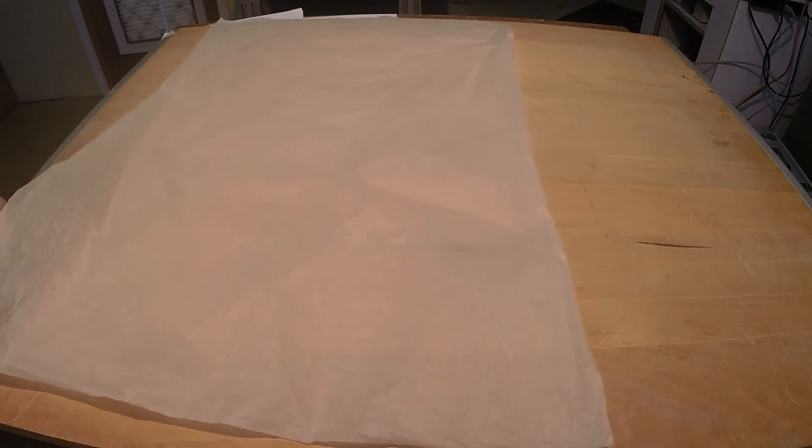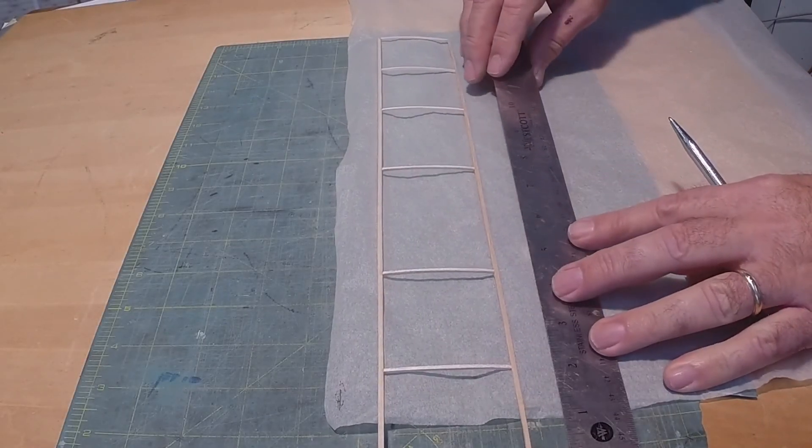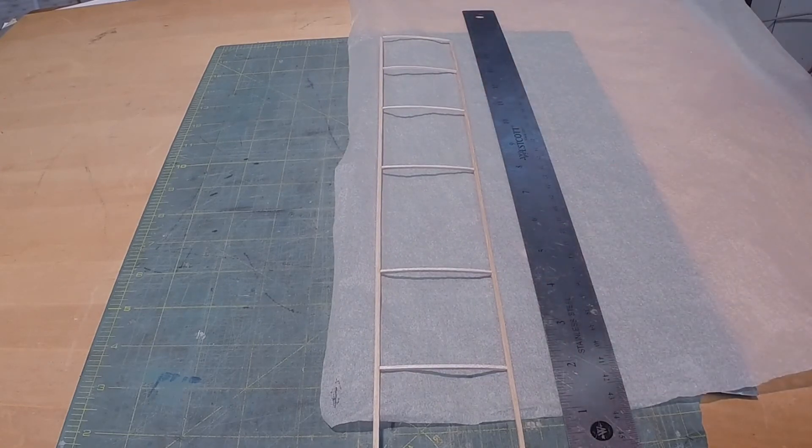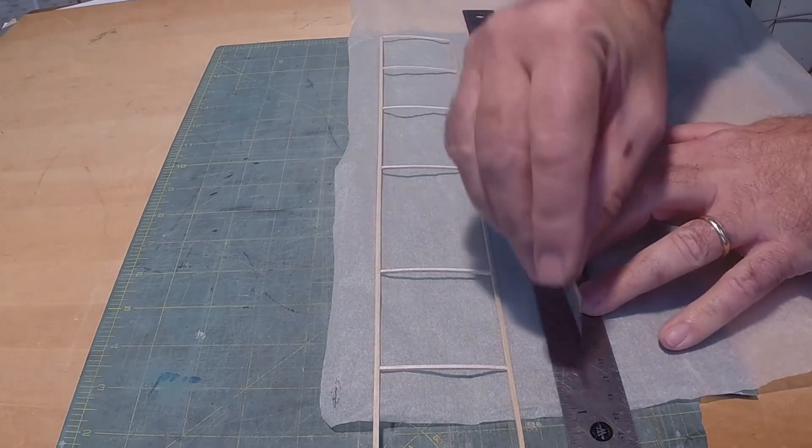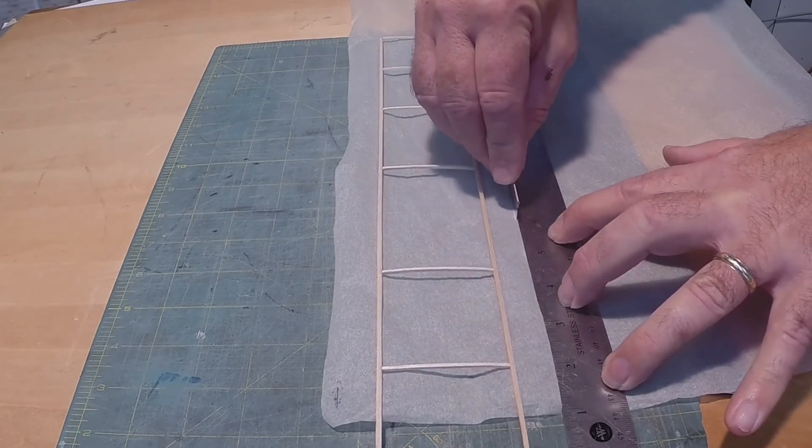At this point it will look horrible. Don't worry, this will be addressed. Tissue is applied with the grain running parallel to the longest dimension. If the wing has turned up panels, a piece will be needed for the center panel and each tip panel.